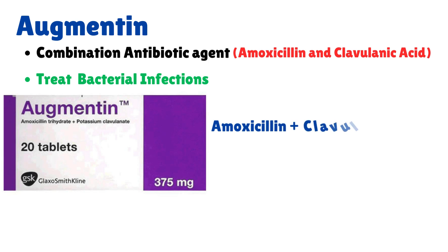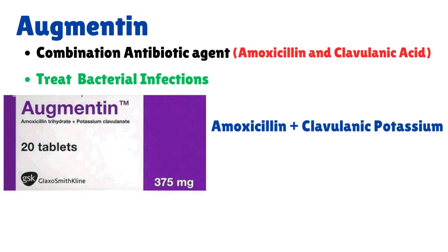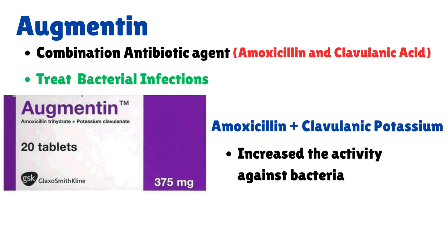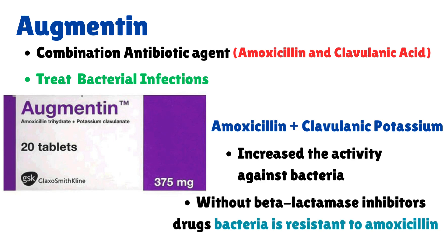Amoxicillin, when combined with clavulanic potassium, has increased activity against bacteria, because without beta-lactamase inhibitor drugs, bacteria are resistant to amoxicillin.